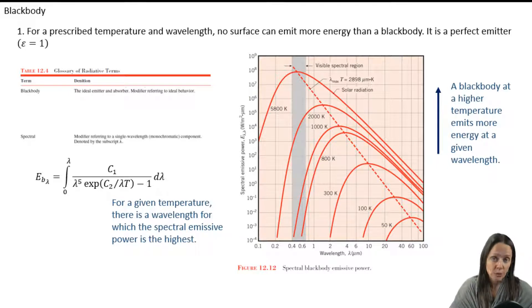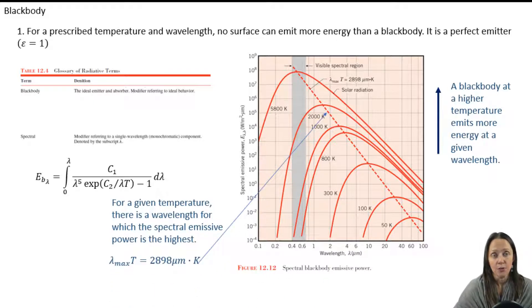In fact, that maximum spectral emissive power at a given temperature and wavelength are related by a simple relationship called Wien's Displacement Law. Make sure, of course, to put those temperatures in absolute temperature units.